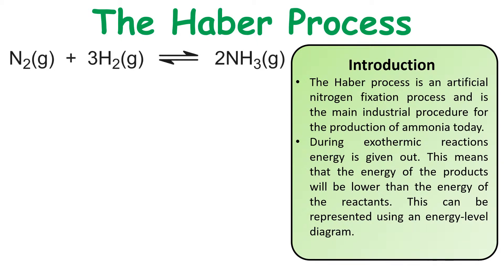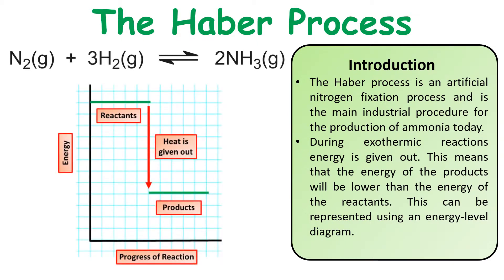During the exothermic reaction, energy in terms of heat is given out. This means that the energy of the products will be lower than the energy of the reactants. This can be represented in an energy level diagram. It's important that when you draw energy level diagrams, the reactants are physically higher than the products, because the decrease in energy represents the energy that's being given out.